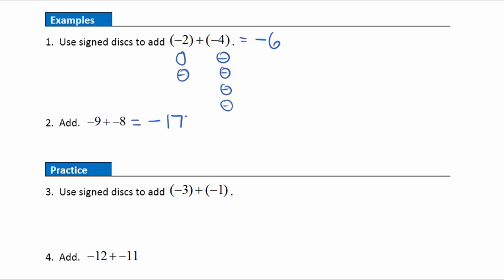Go ahead and pause your video player and answer these practice questions. When you're done, hit play to see how you did. Practice question three: we should have three negatives plus one more negative to give a total of four negatives. And then negative twelve plus negative eleven gives a total of twenty-three negatives.